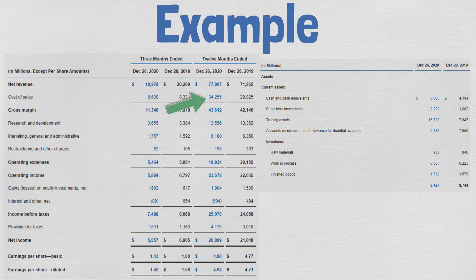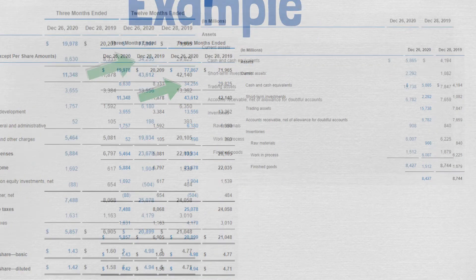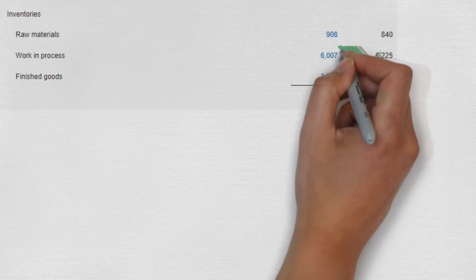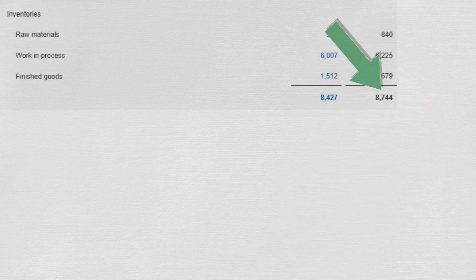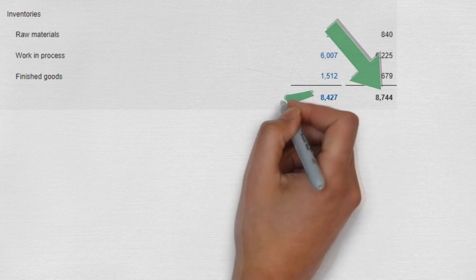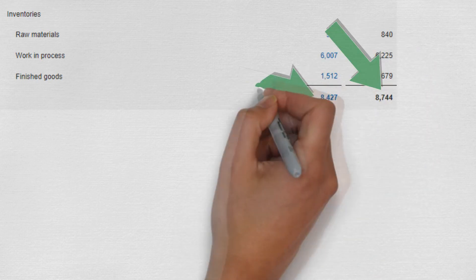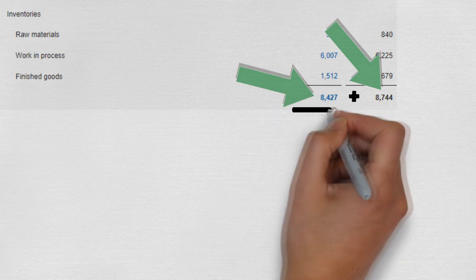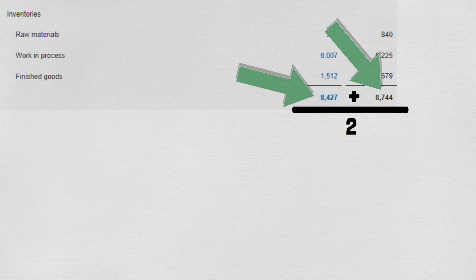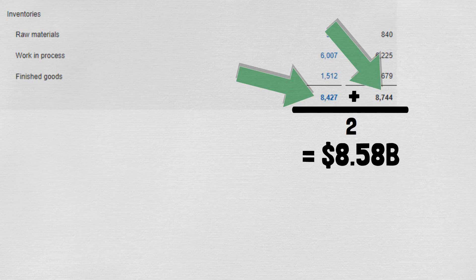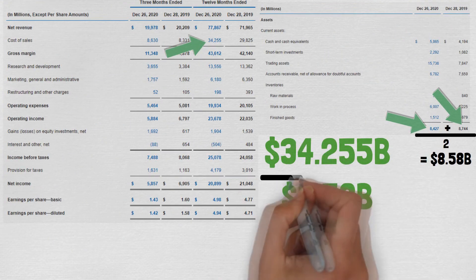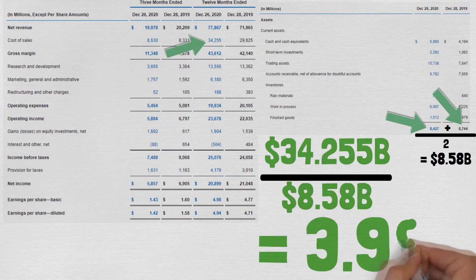Because we are calculating the 2020 turnover ratio, we want to use the average inventory for the year 2020. Intel's 2020 beginning inventory was $8.74 billion and the ending inventory was $8.43 billion, meaning the average inventory was $8.58 billion. The inventory turnover ratio for 2020 was 3.99.